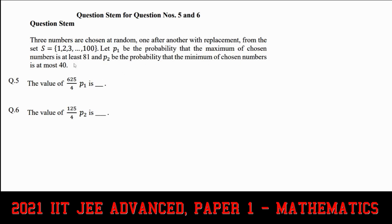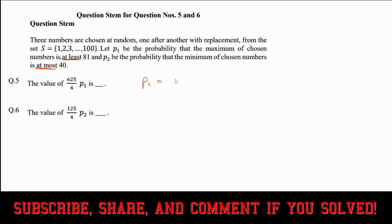So whenever you see at least or at most, then that normally implies that there's going to be some complementary probability, some complementary counting involved, and that is the case here. So to find P1, instead of finding the maximum has to be at least 81, we can say it's 1 minus the probability that the maximum is less than 81. So that should hopefully clear things up.